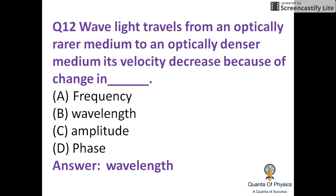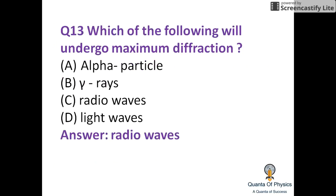When light travels from an optically rare medium to an optically denser medium, its velocity decreases due to a change in wavelength. Frequency never changes when the medium changes.